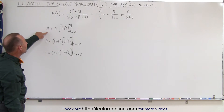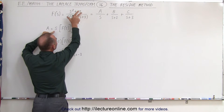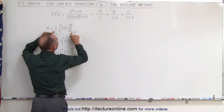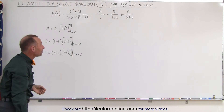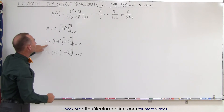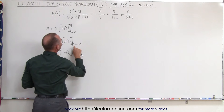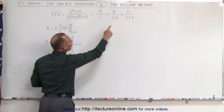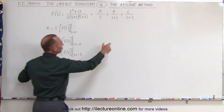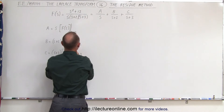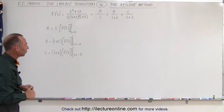Notice that A can be found by taking the denominator, multiplying it times the function, and evaluating the whole thing when s equals zero — in other words, the root of that denominator. The same thing for B: we can find it by taking the denominator s plus 2, multiplied times the function, and evaluated at s equals minus 2, again the root of what the denominator cannot be. And finally, C can be found by taking s plus 3 multiplied times the function and evaluated at s equals minus 3 — what would make the denominator equal to zero.